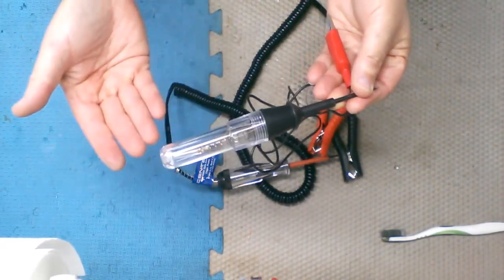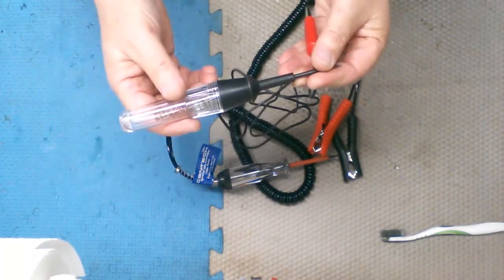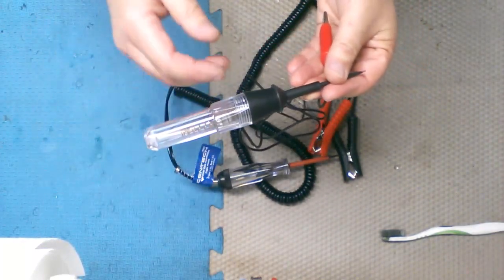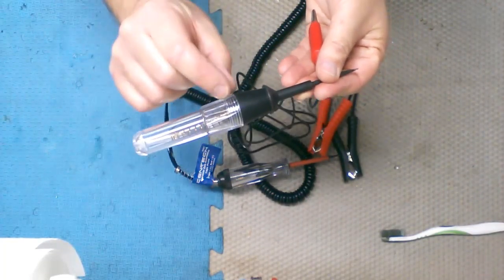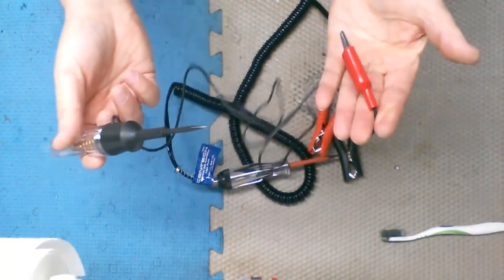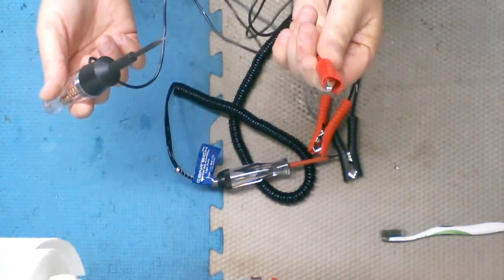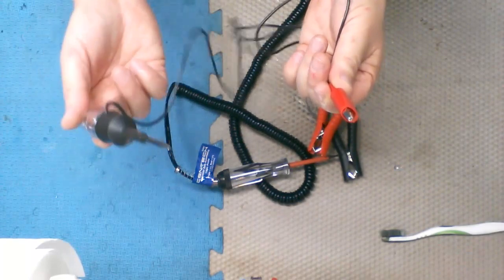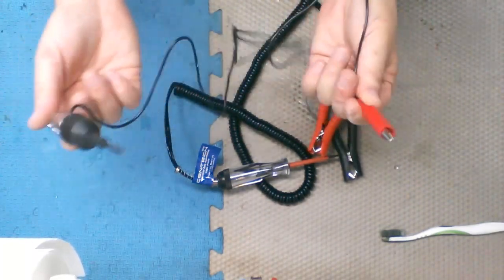This test light is old. This is like 30 years old and they haven't changed in all this time. A simple light bulb that'll take up to 24 volts before it burns out. So it'll do anything, you know, 3, 6, 12, etc. Anything in there. The weaker the voltage, the dimmer it is. The more power it gets, the brighter it gets.